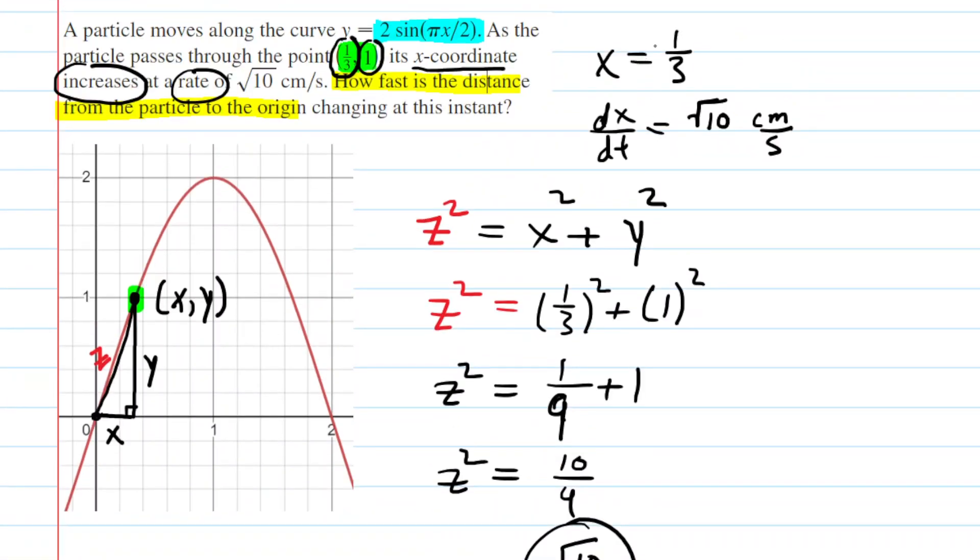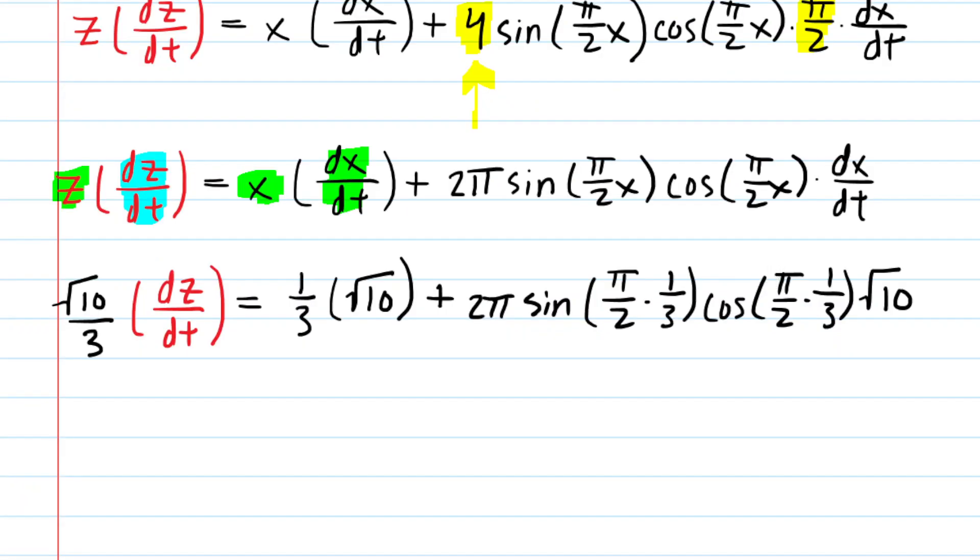We know z is √10/3, we know x is 1/3, and we know dx/dt is √10 centimeters per second. Let's go ahead and plug all that data in. Great, everything has been plugged in at this point, and we've omitted the units for clarity.